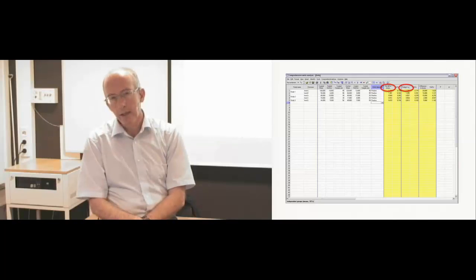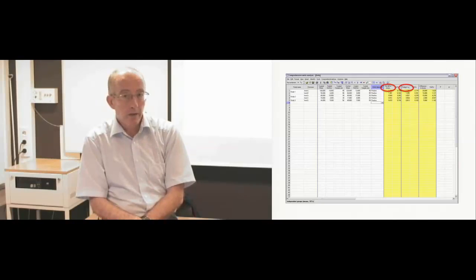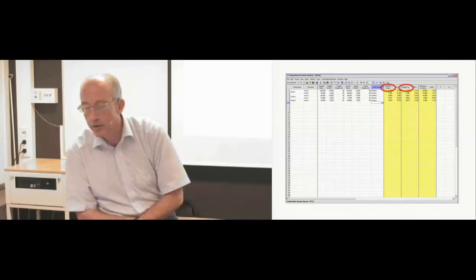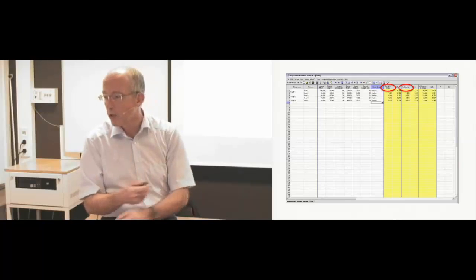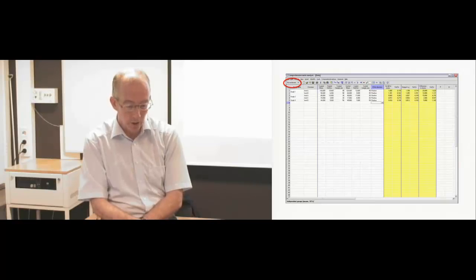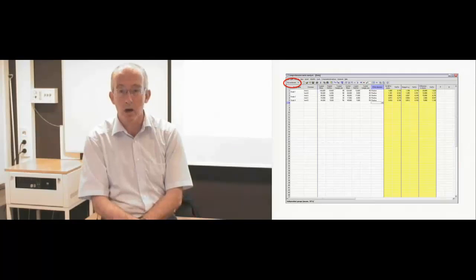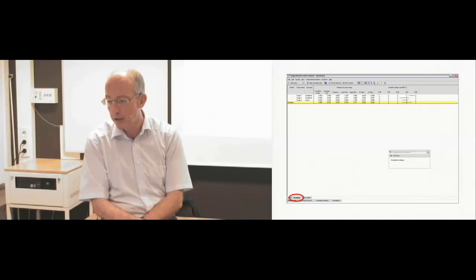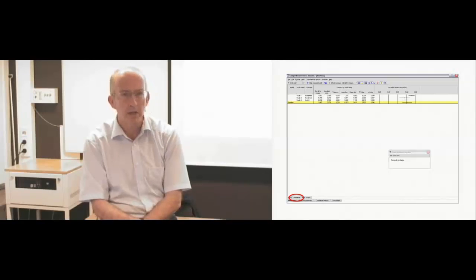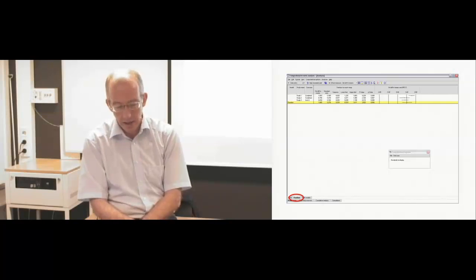Once you have entered these data, you get the values for the effect sizes and standard errors — you see the standardized difference in means, which is Cohen's D, and you see Hedges' g with the standard error. Then you are ready to run your basic analysis. You click the Run Analysis button and get to a new screen. At the bottom of the screen you can choose the model — and we always work with a random effects model, so you push the random button.